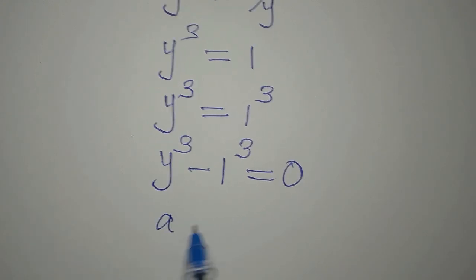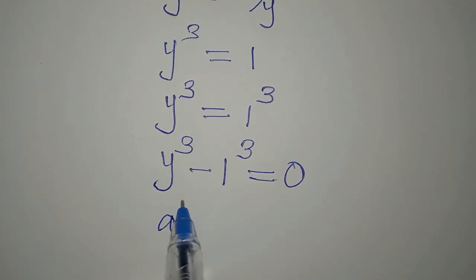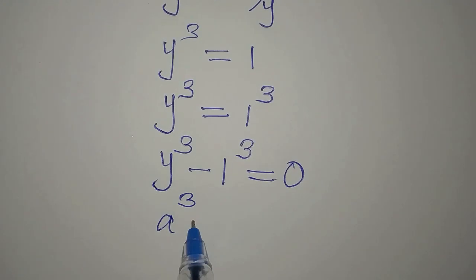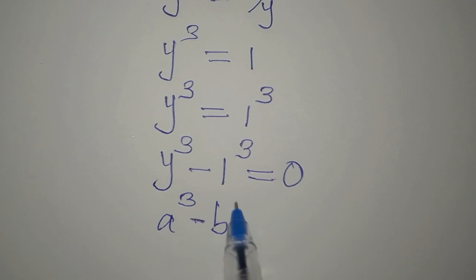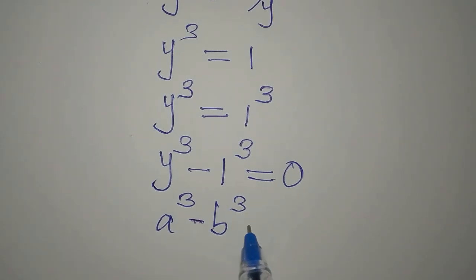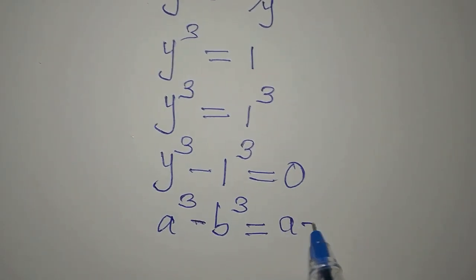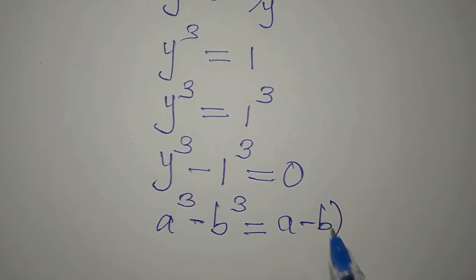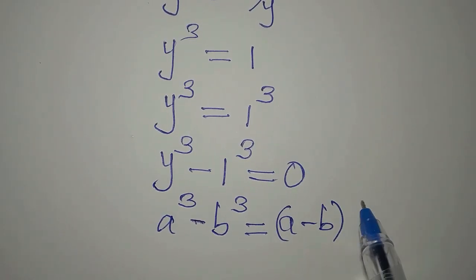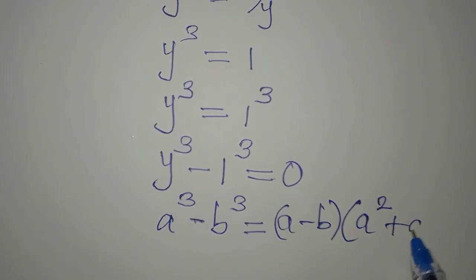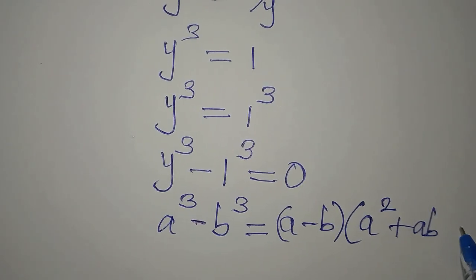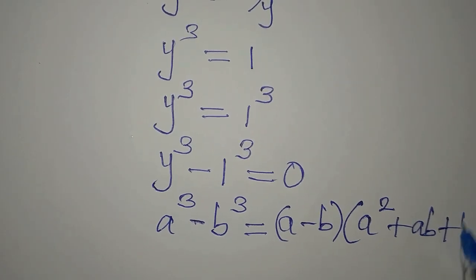If you have a to the power of 3 minus b to the power of 3, this gives a minus b multiplied by a squared plus ab plus b squared.